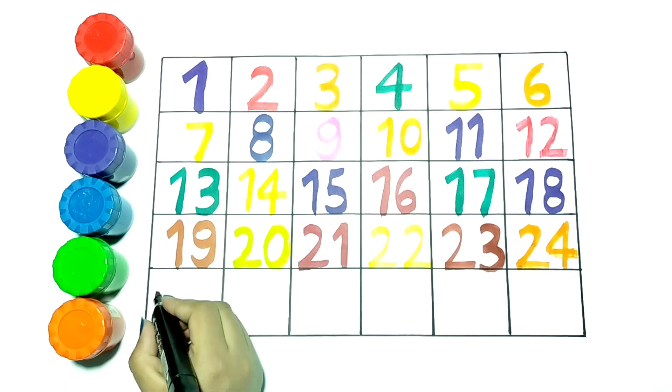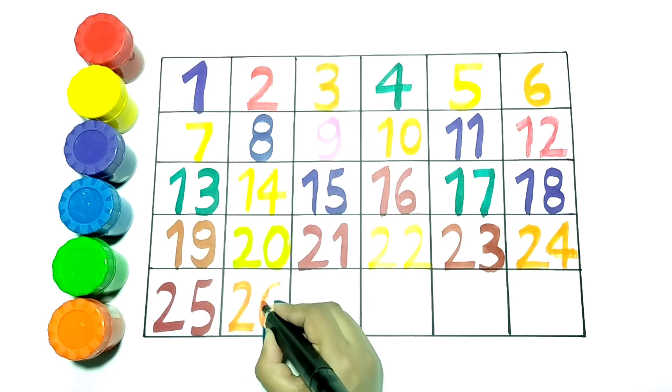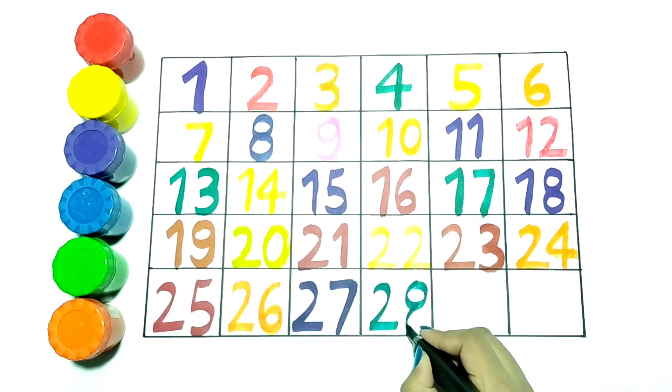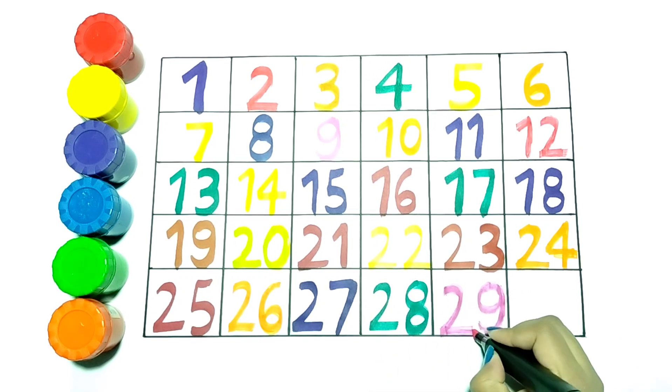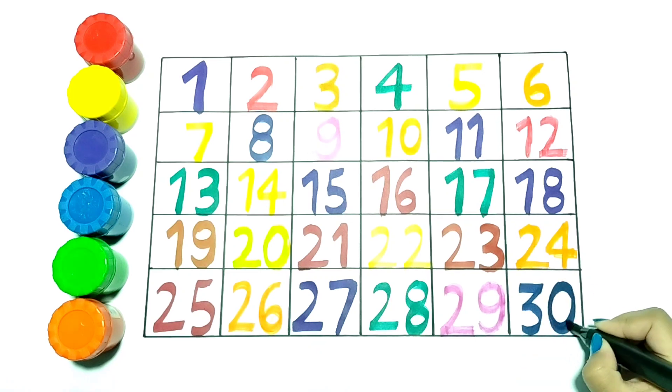Now writing 25 with brown color. Let's write 26. 27. This is 27. Now I am writing 29 with pink color. And this is 30. It is in purple color.